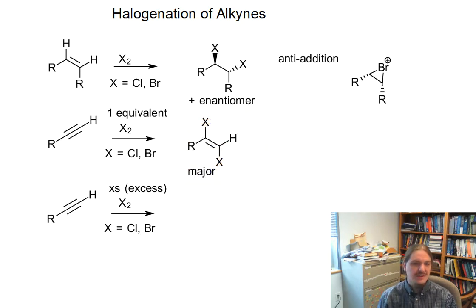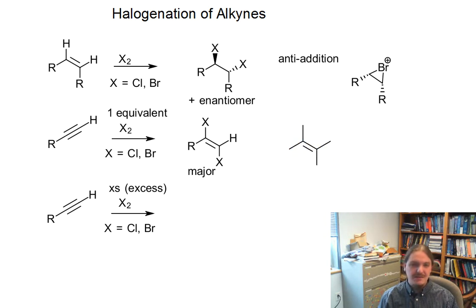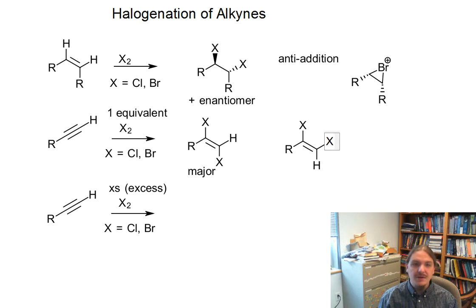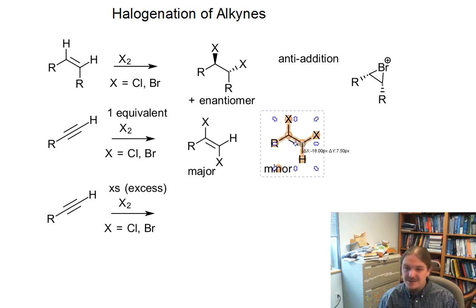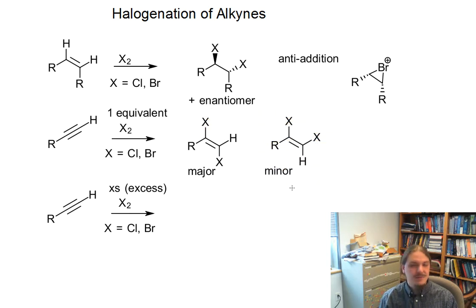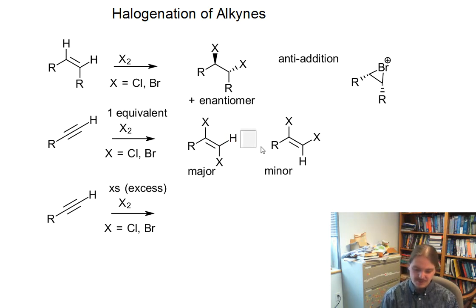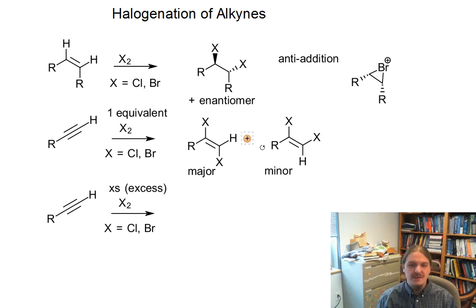The dihalo alkene is the major product, and you might suspect that means there's a minor product — there is. This is one place where it's a little bit different than the alkene case: in addition to the anti-product as the major product, this reaction also produces a little bit of the cis product as the minor product, whereas the alkene version pretty much only produces the anti-addition product.